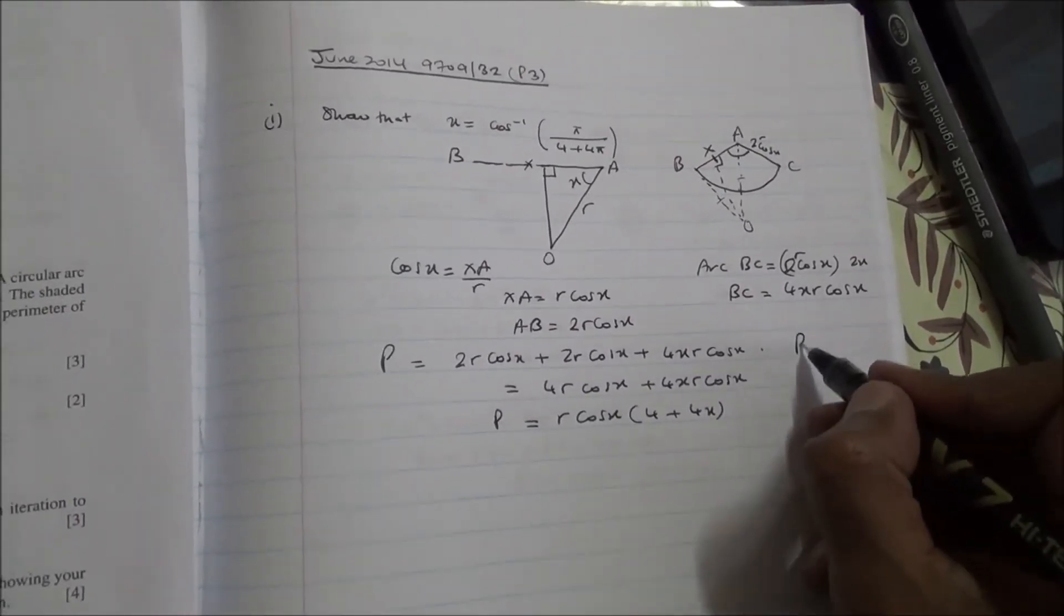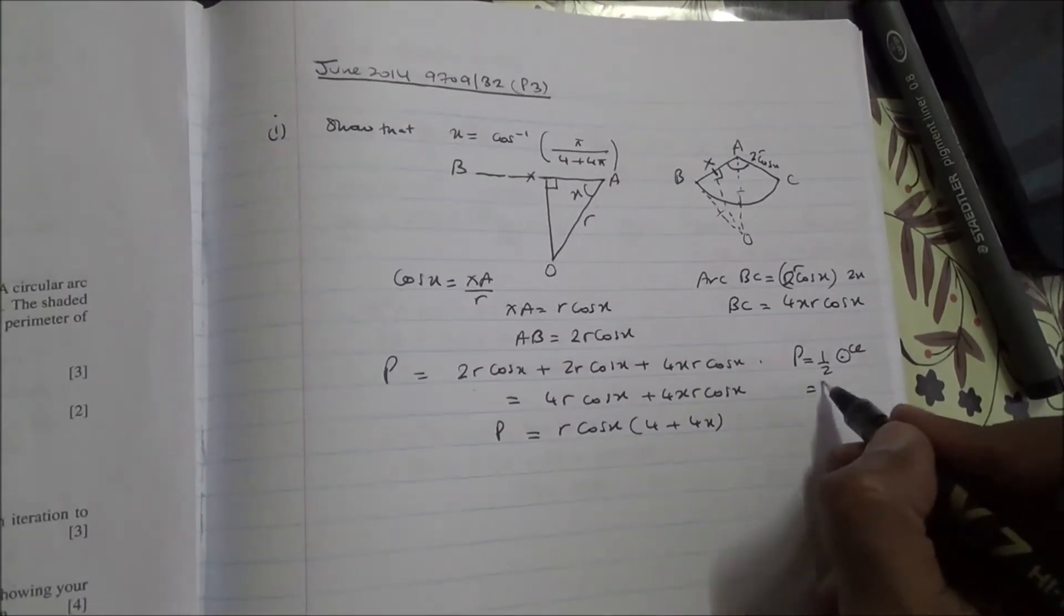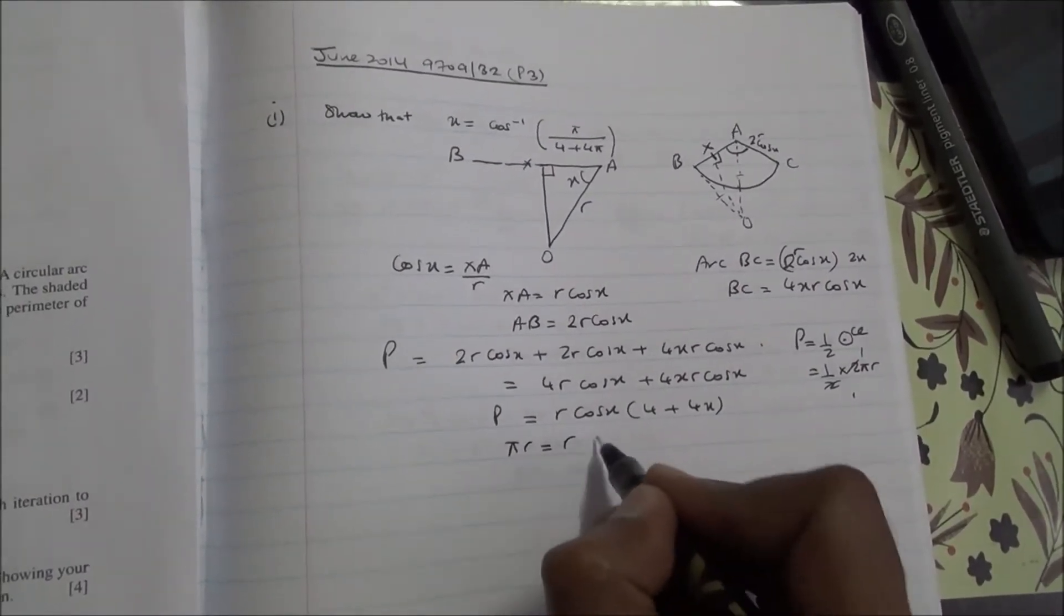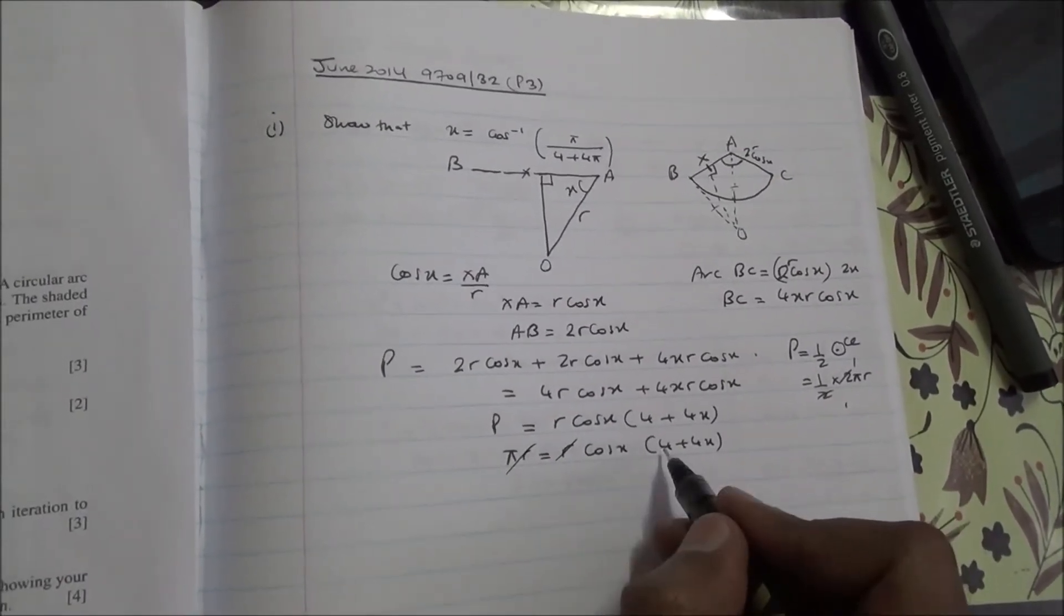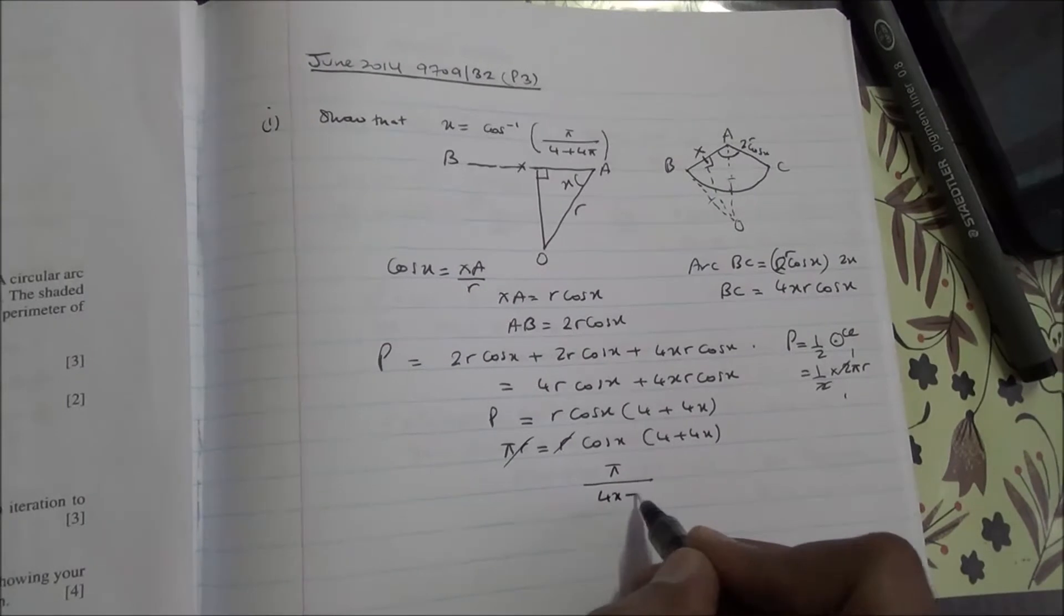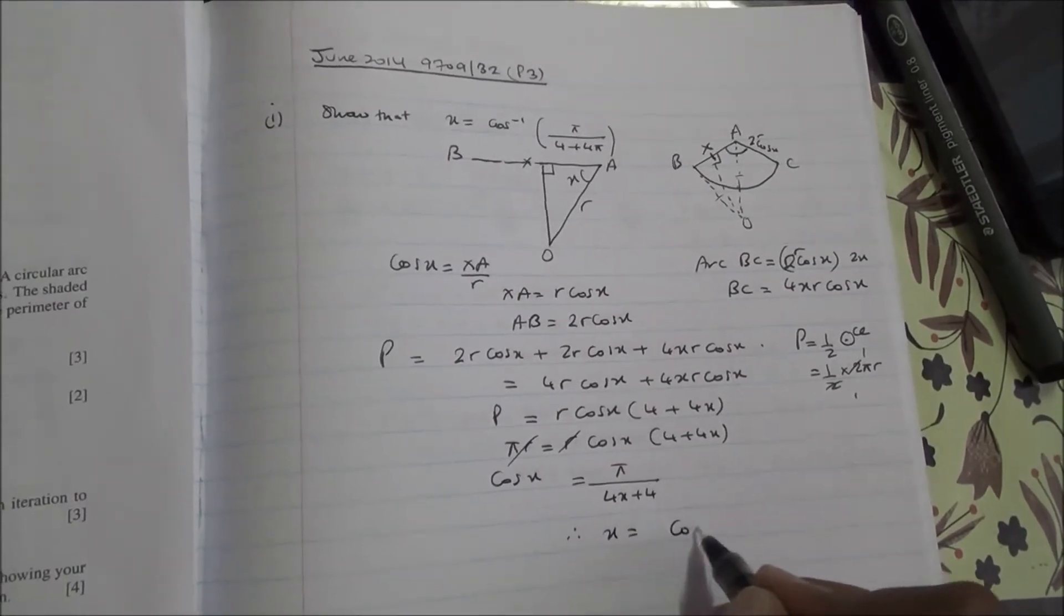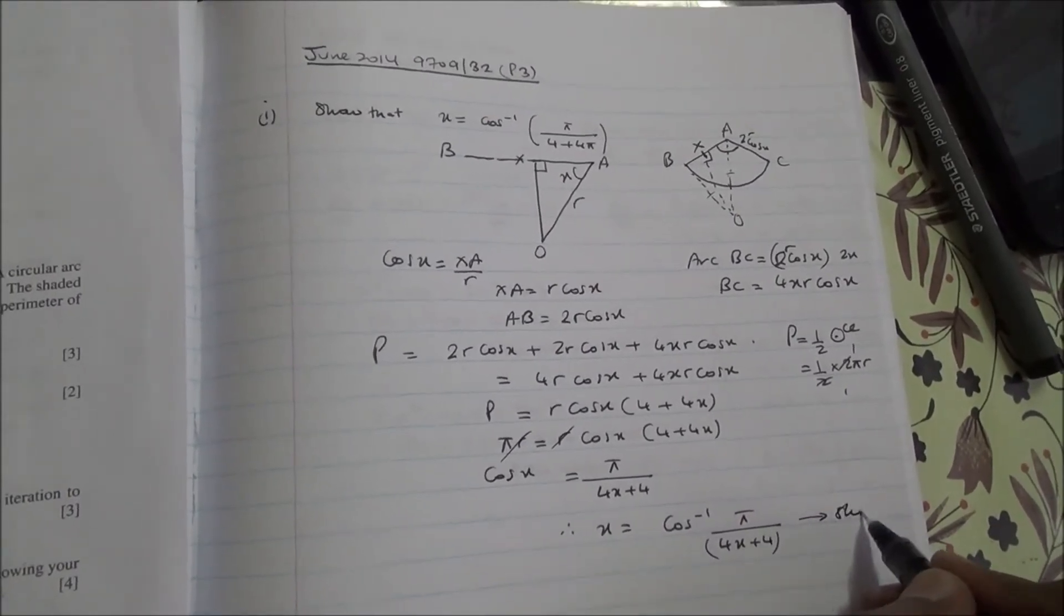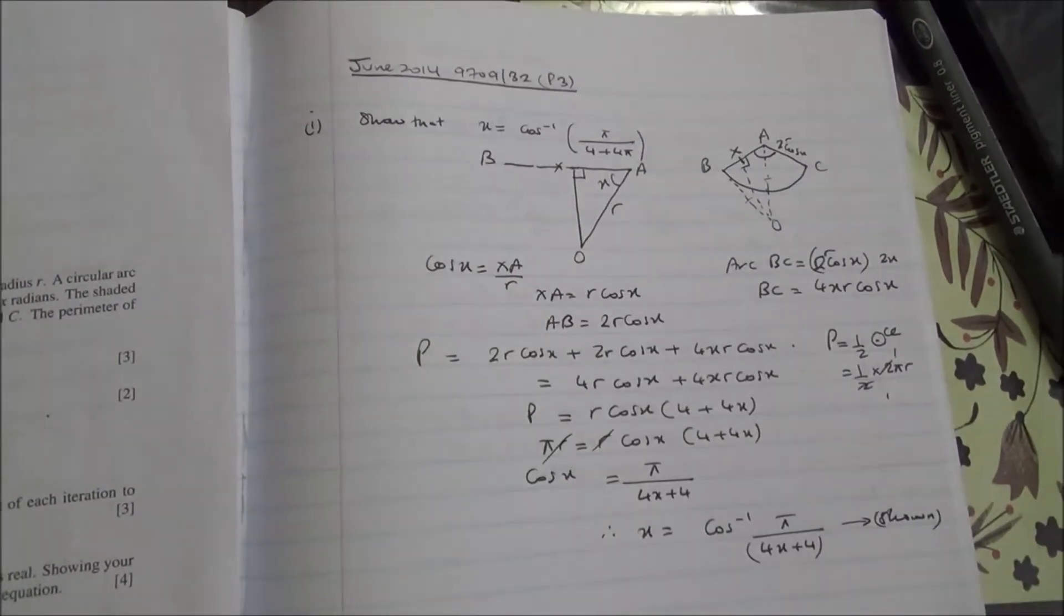We are told in the question the perimeter of the shaded region is half the circumference of the big circle. So that's going to be half times the circumference of the circle is 2πR, so πR. So πR is equal to R cos of X into 4 plus 4X. This and this can go out, and I'm left with π divided by 4X plus 4 is equal to cos of X. Therefore, X is going to be the inverse cos of π upon 4X plus 4, and that's the first part, and it has been shown.